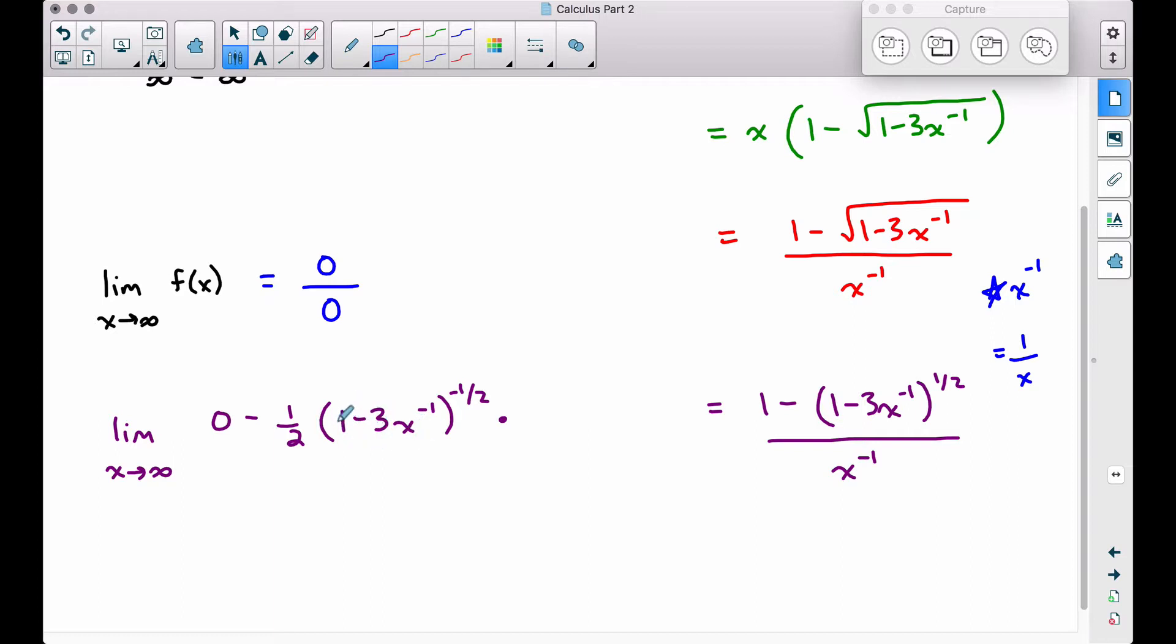applying the chain rule, we need to multiply by the derivative of this stuff that we left alone. The derivative of this inside piece is going to be 0 there, and then we have the derivative of this term here. Negative 1 times negative 3 is positive 3, x to the negative 2. And again, what I did here was I subtracted 1 from my exponent when I differentiated that piece. This is all over, the derivative of our bottom piece is going to be negative 1 x to the negative 2. Pull your power down, subtract 1 from your exponent, that's how I got this piece right here.